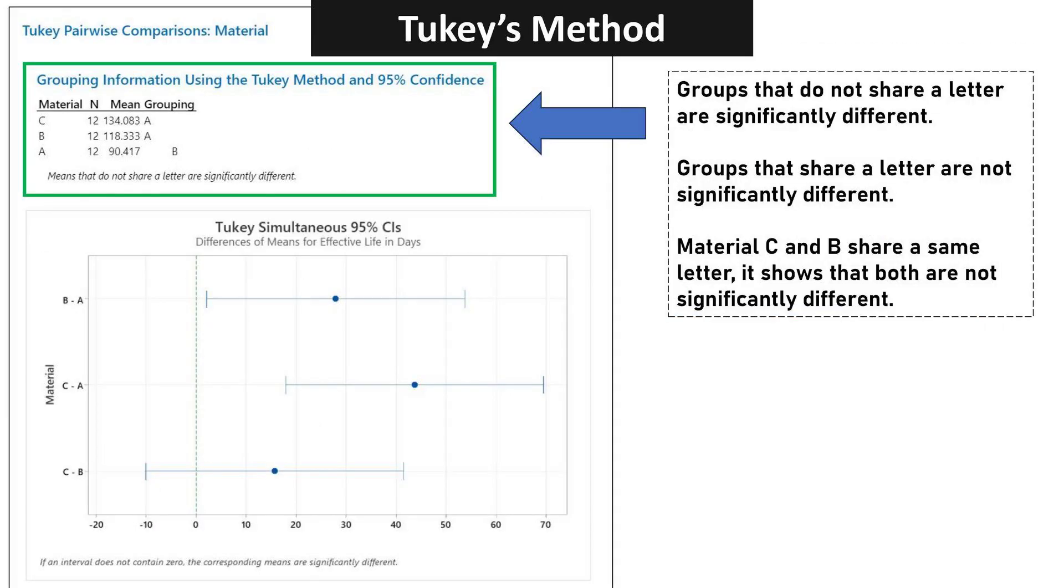In the grouping information using the Tukey Method and 95% Confidence, groups that do not share a letter are significantly different. Groups that share a letter are not significantly different. Material C and B share the same letter, it shows that both are not significantly different.